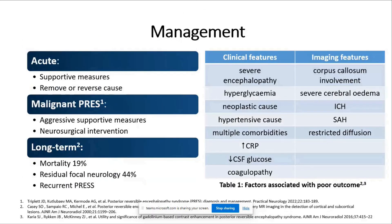Acute management is mainly about supporting patients through the acute phase of the illness and involves maintaining adequate hydration, using anti-seizure medications to achieve seizure control, and identifying and correcting the trigger — for instance, using antihypertensive agents to treat hypertension, early delivery in pregnant patients, stopping any causative medications, and correcting electrolyte abnormalities.